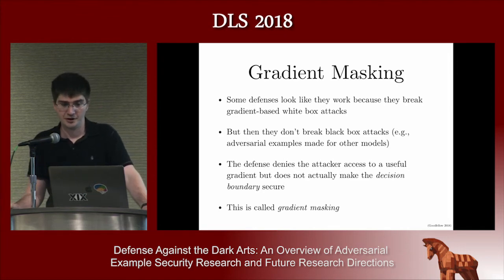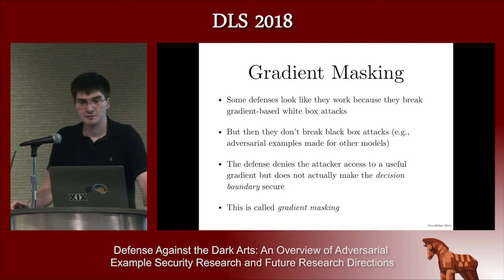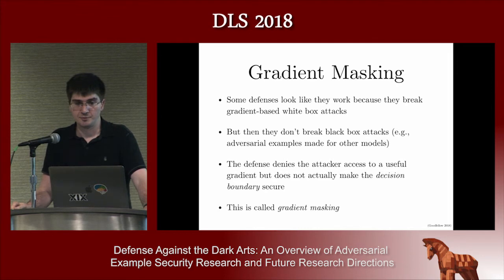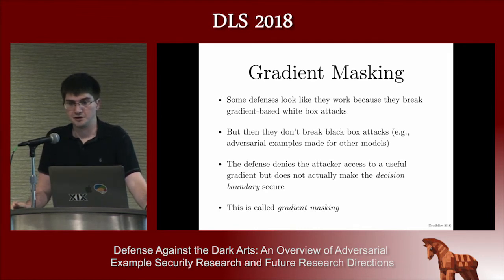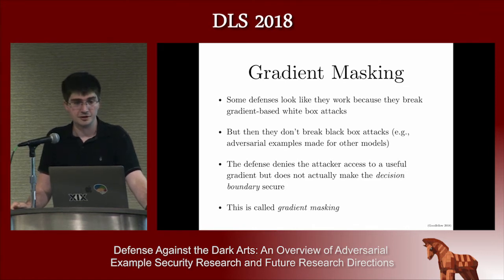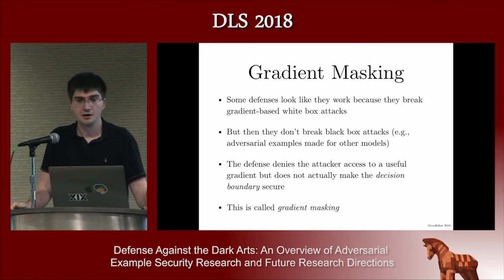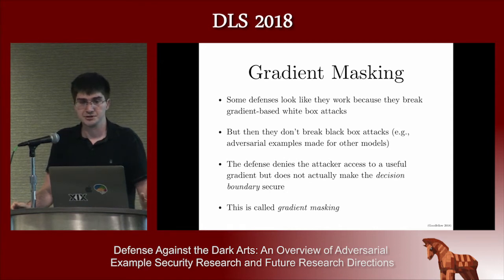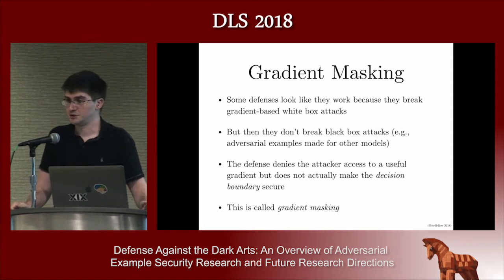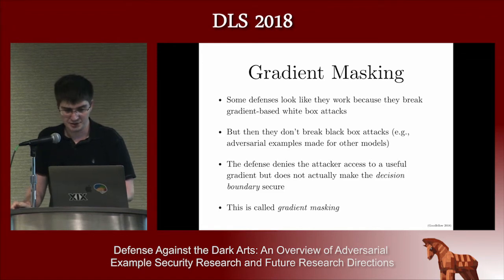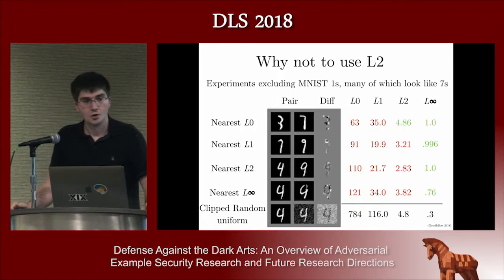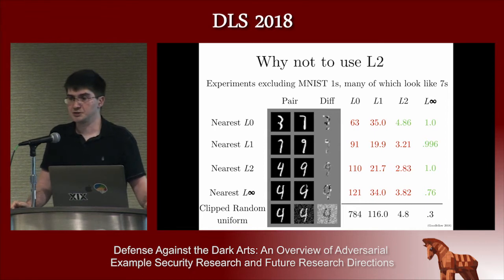Sometimes you see defenses that intentionally use gradient masking — for example, taking hidden units and rounding them to zero or one rather than using continuous values, making the gradient through the network zero. That's intentional gradient masking. A lot of the time we have unintentional gradient masking — if we train on lots of adversarial examples, sometimes we get models resistant to the attack we trained on, but the decision boundary hasn't moved very much. All that was learned was how to break the optimizer we trained against.